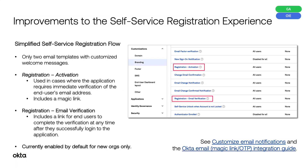Here are some of the generally available new features released this month. Improvements to the self-service registration experience. Earlier versions of the self-service registration flow used a complicated array of templates to send activation emails to end users. The simplified self-service registration flow reduces the process to only two email templates with customized welcome messages.